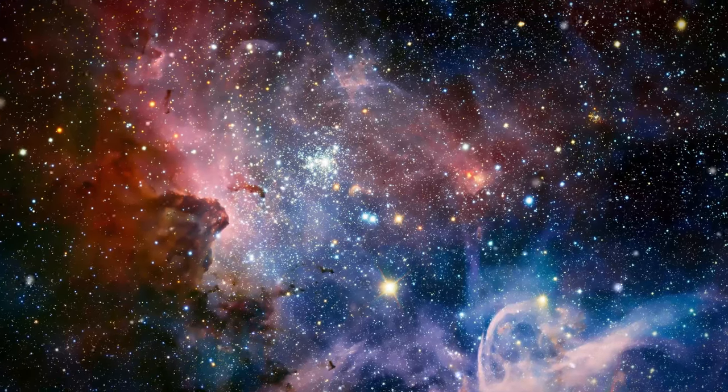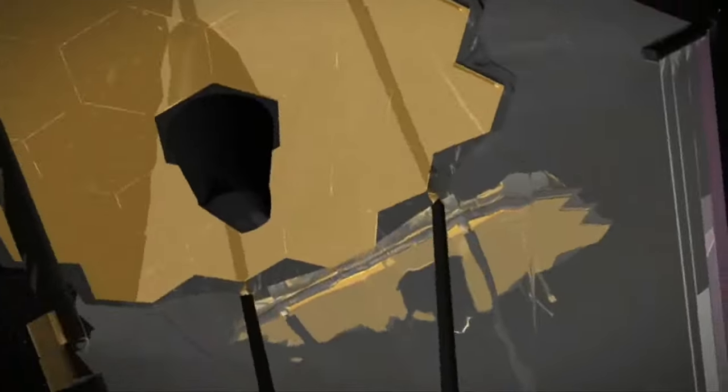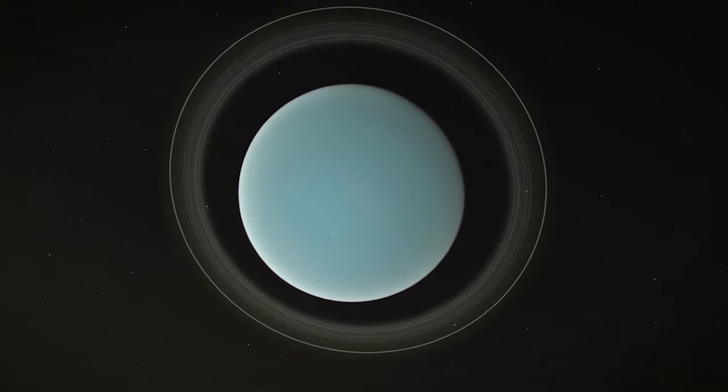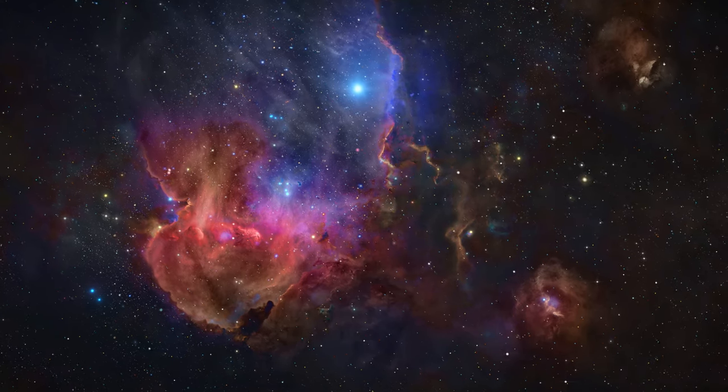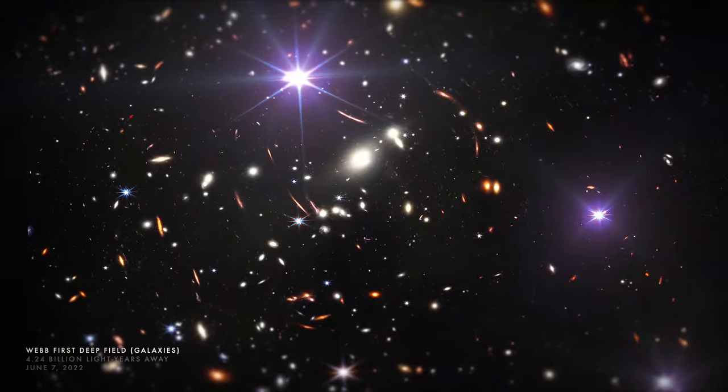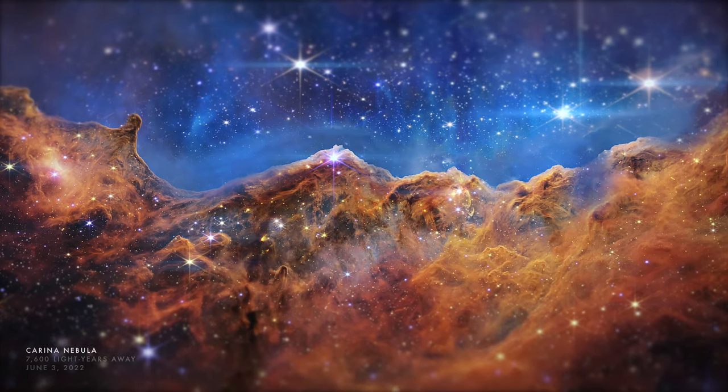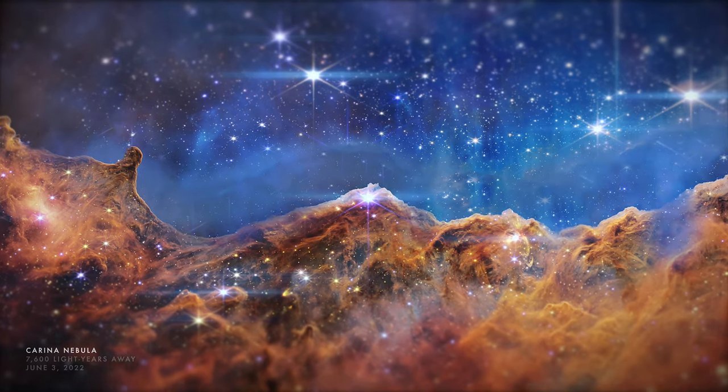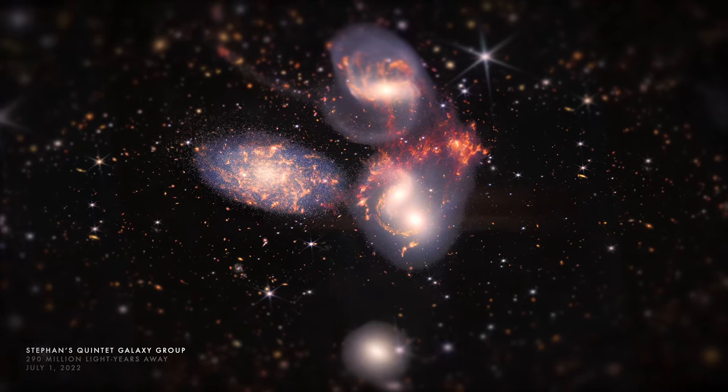Thank you for joining us on this captivating voyage through the cosmos, guided by the remarkable observations of the James Webb Space Telescope. Today, we've journeyed from the mysterious rings of Uranus to the star-forming clouds of the Running Chicken Nebula, and encountered the smallest known brown dwarfs. Each discovery not only deepens our understanding of the universe, but also ignites our curiosity about what lies beyond the observable. We hope this exploration has inspired you as much as it has informed you. Keep looking up and questioning the cosmos.